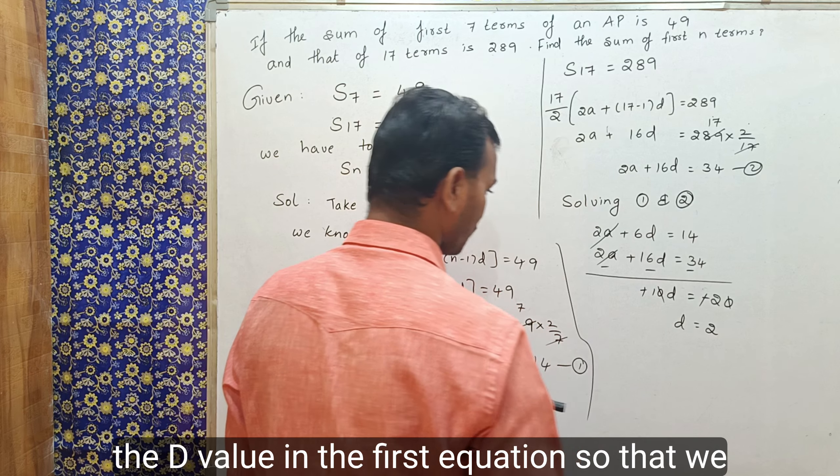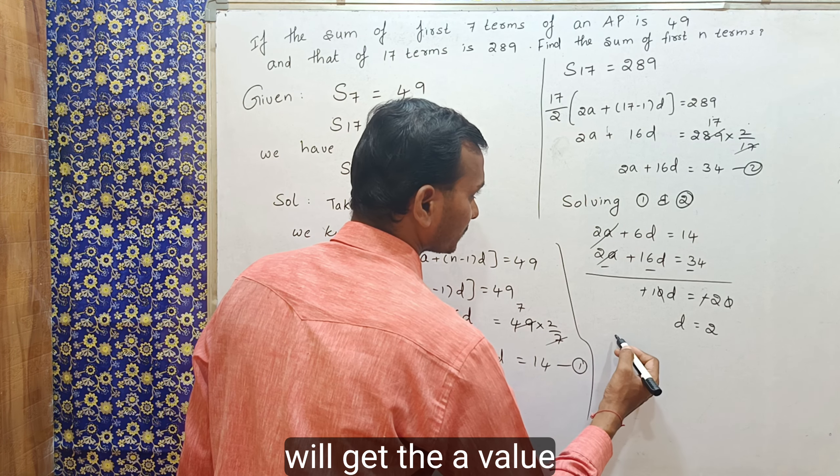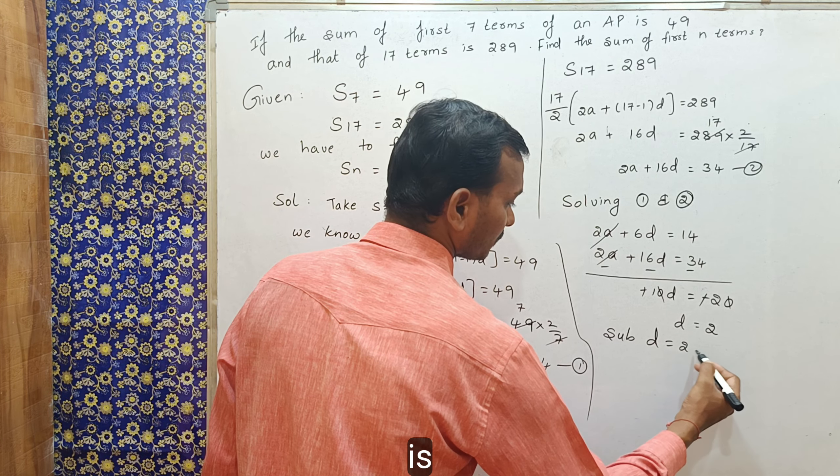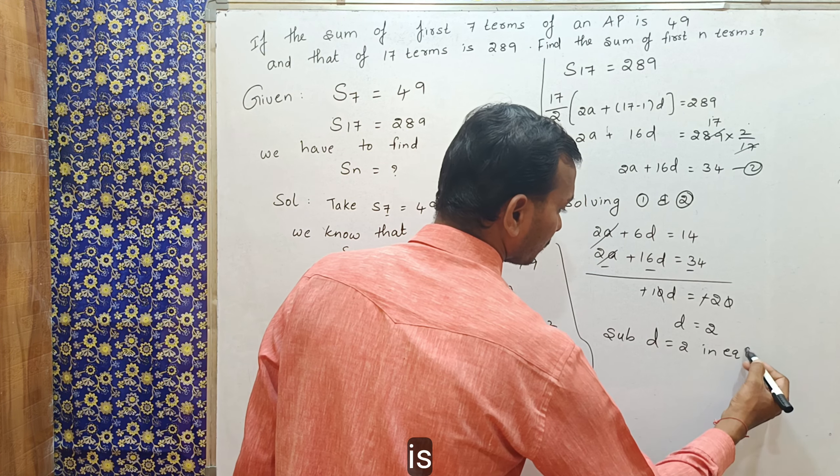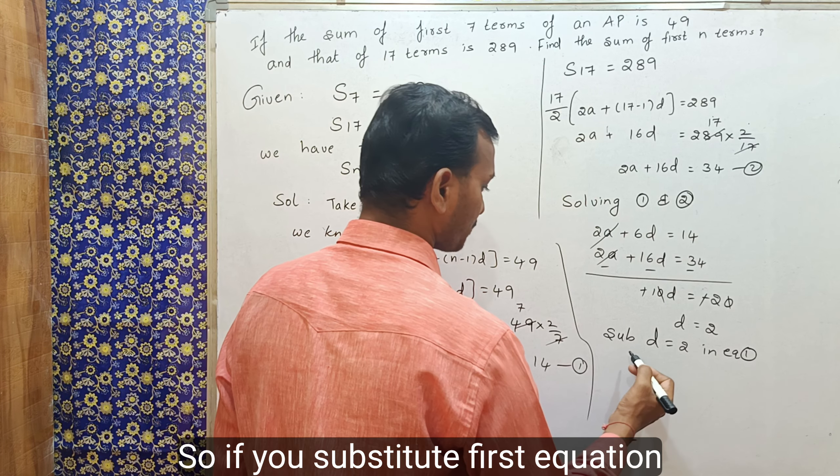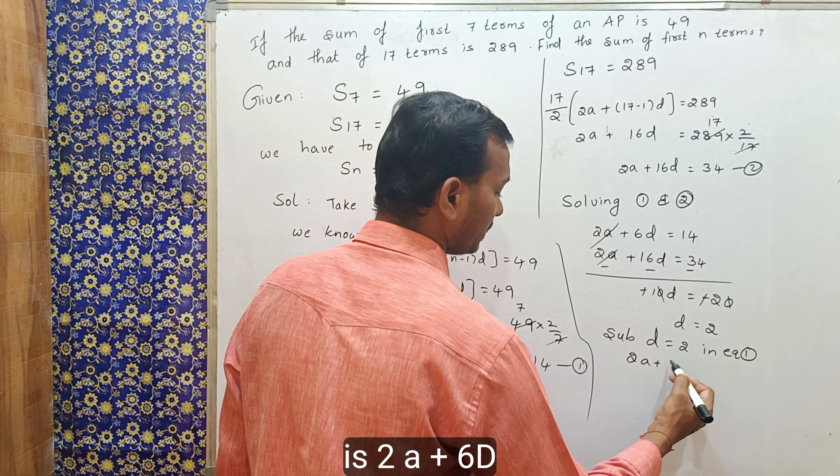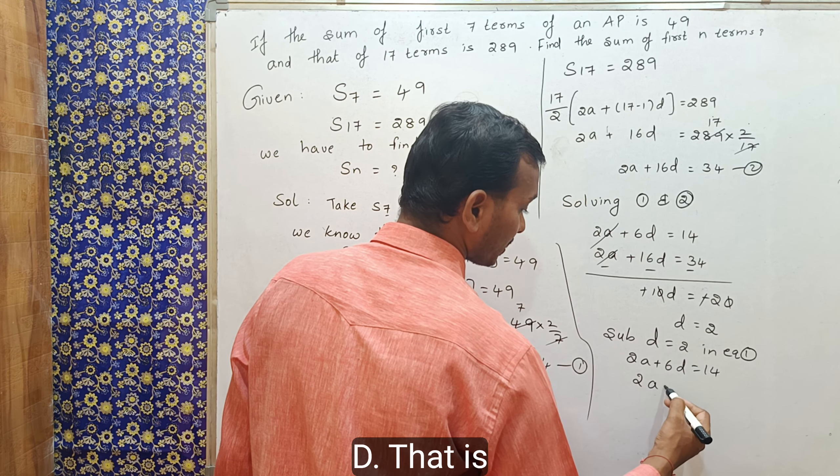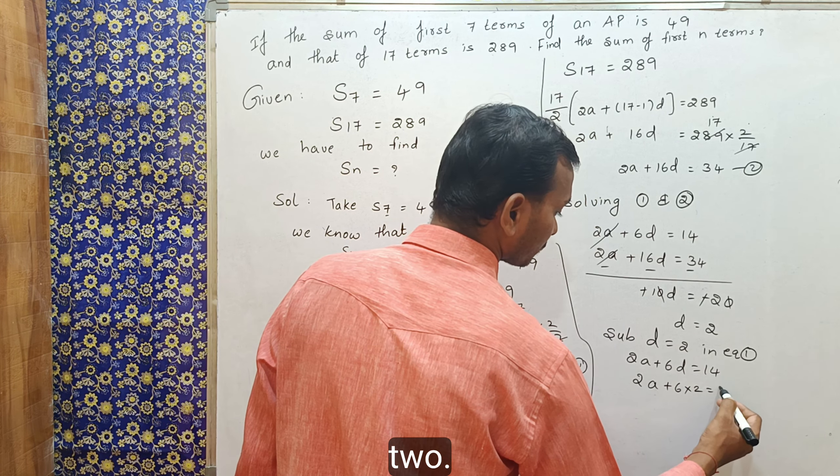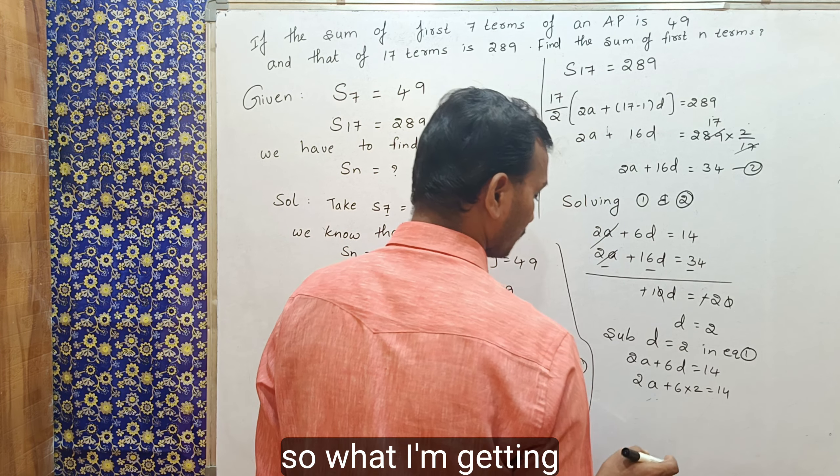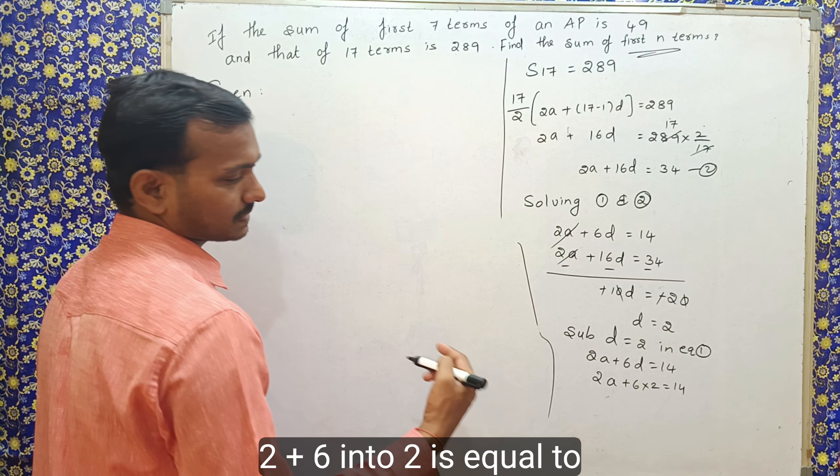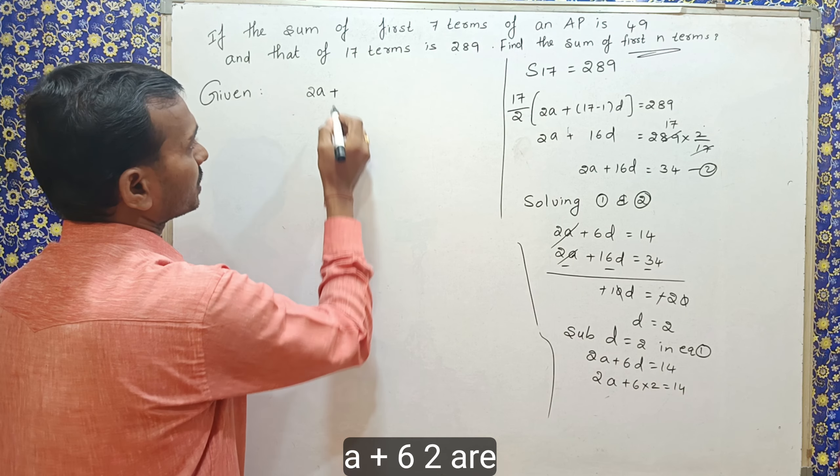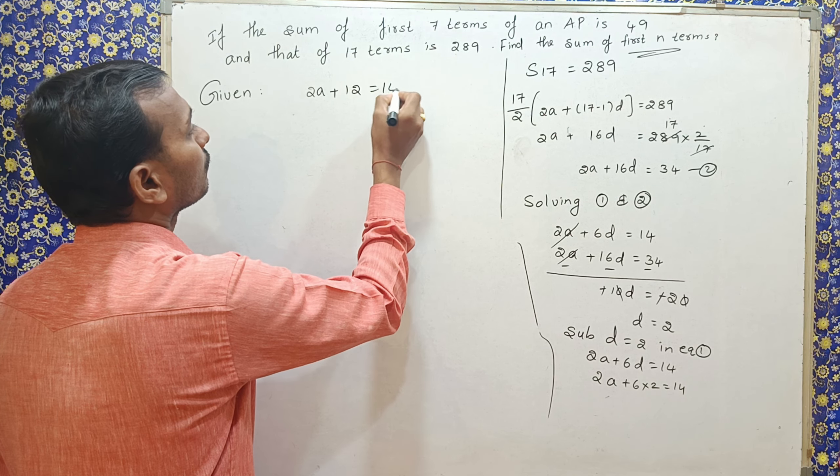Substitute the d value in the first equation. So that we will get the a value. First equation is 2a plus 6d is equal to 14. I am substituting in the place of d, that is 2. So, what I am getting here? 2a plus 6 into 2 is equal to 14. 2a plus 12, that is equal to 14.